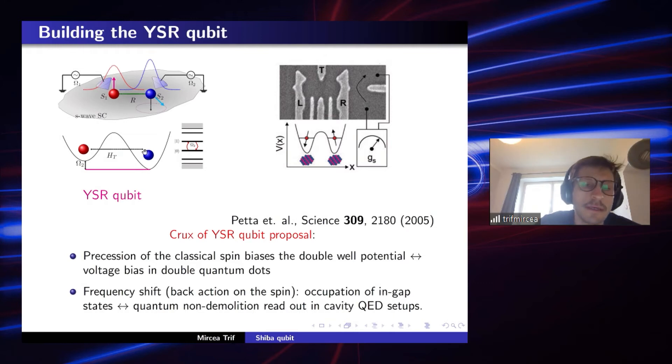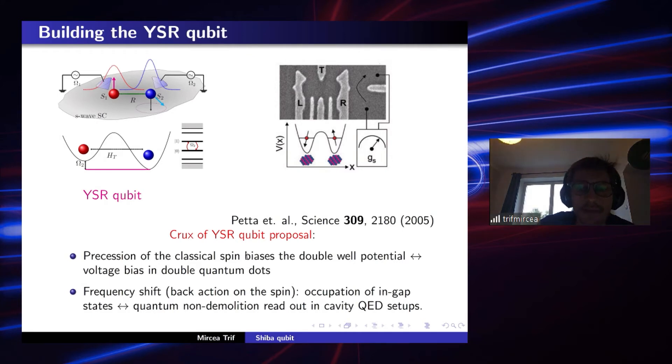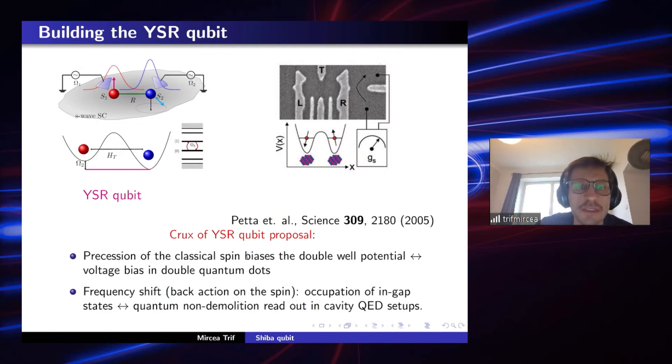Here, what we say is by inducing dynamics of the magnetic impurity through the coupling to superconducting electrons, we can shift the well potential up and down, thus bringing the two levels on the left and right in resonance. And that will allow to manipulate this qubit. So it's beyond, so that also brings into discussion the dynamics of the magnetic impurities, which we have besides the statics. So to summarize, the classical spin bias is the double well potential. So it acts like a voltage bias in a double quantum dot system. And furthermore, on the left side here, frequency shift, back action on the spin. So by measuring the resonance frequency of the left spin, and more specifically the changes in the frequency shift of the left spin, one can read out the occupation of this in-gap state. In a way, it's kind of similar to quantum non-demolition, read out in cavity QED setup. So if the qubit is up or down, the frequency shift of the left impurity will be different. So that would correspond to read out.